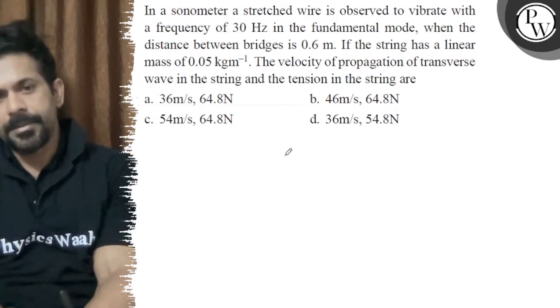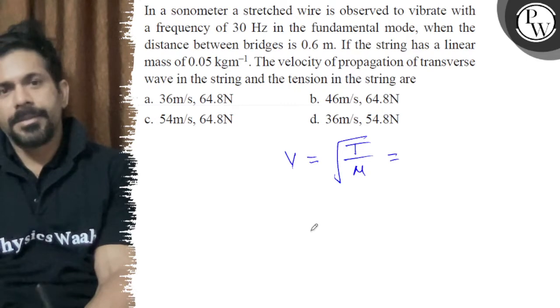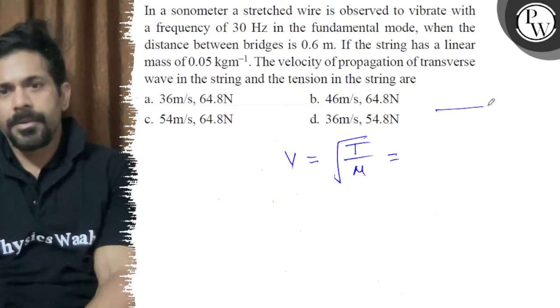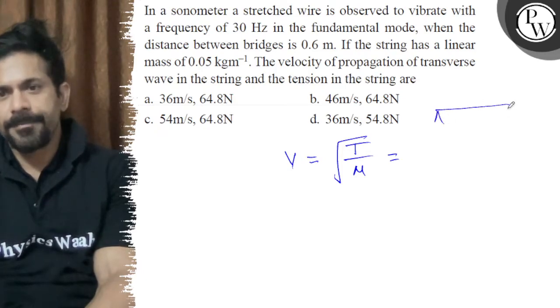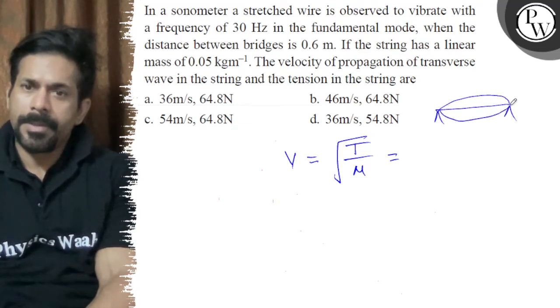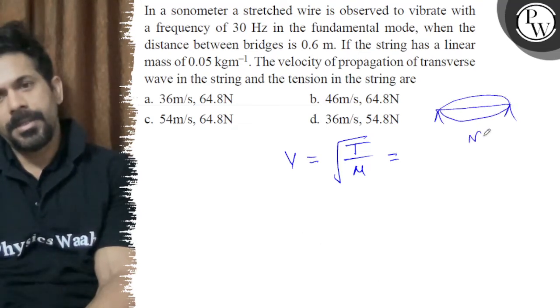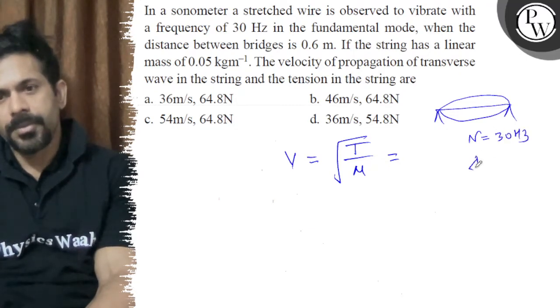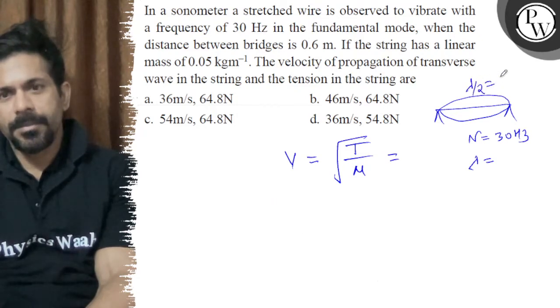And the tension in the wire, v is equal to root T by mu. And if we can see, we have bridges and the fundamental mode. In the fundamental mode, n is equal to 30 Hz, and lambda by 2 is equal to 0.6, so lambda is equal to 1.2 meters.